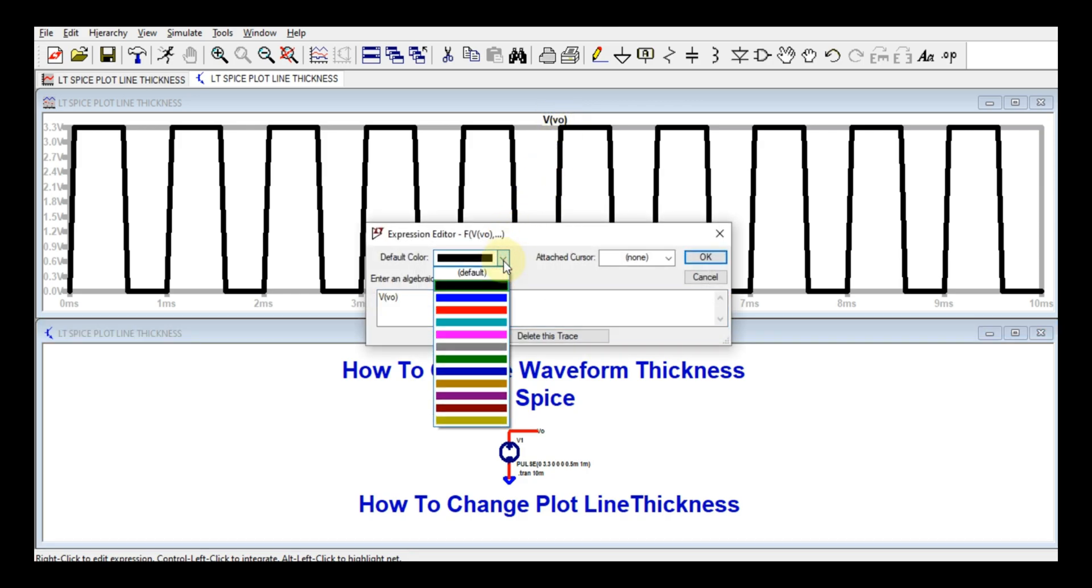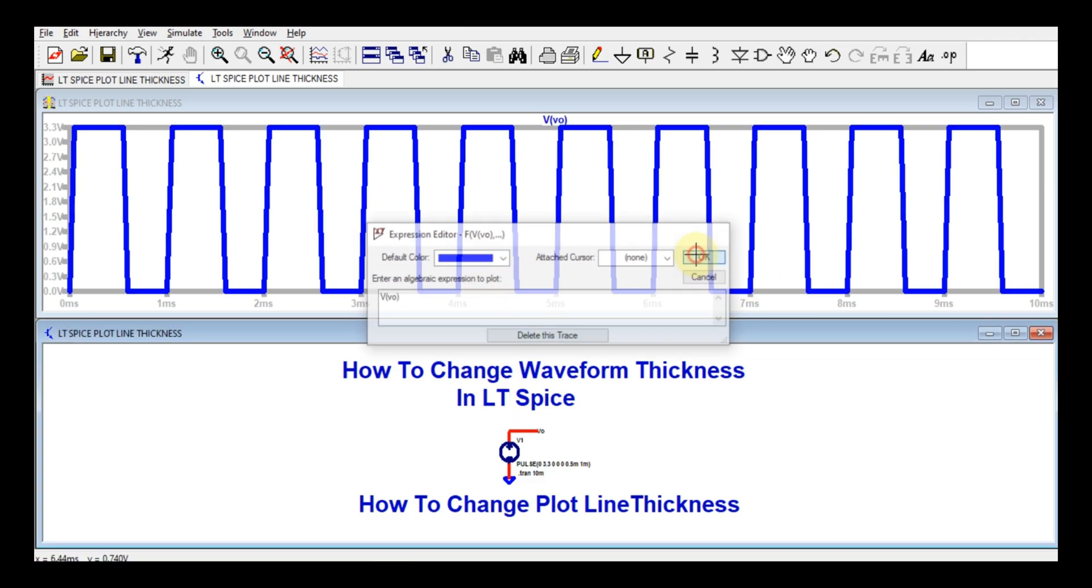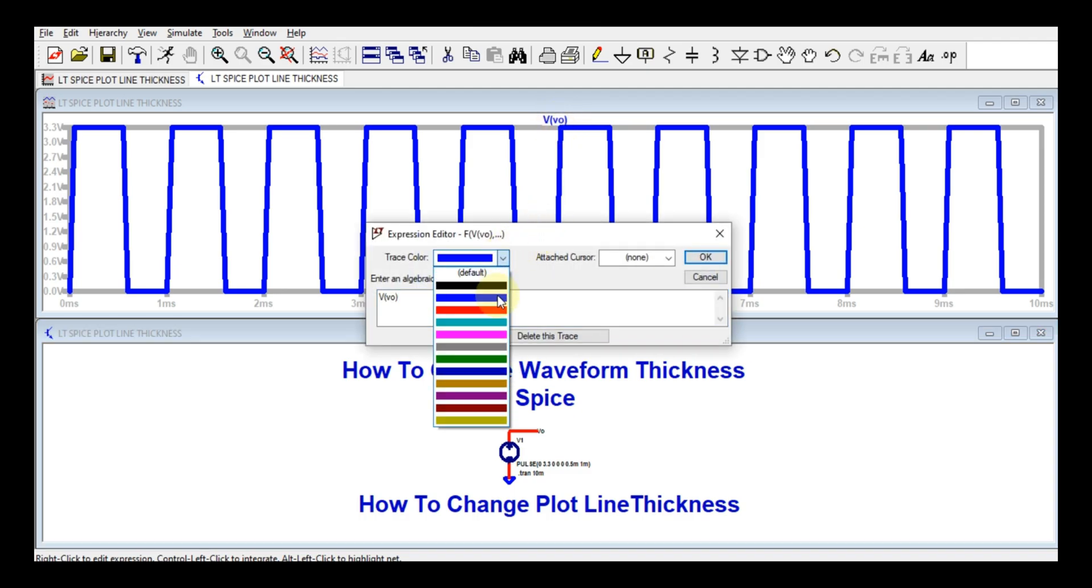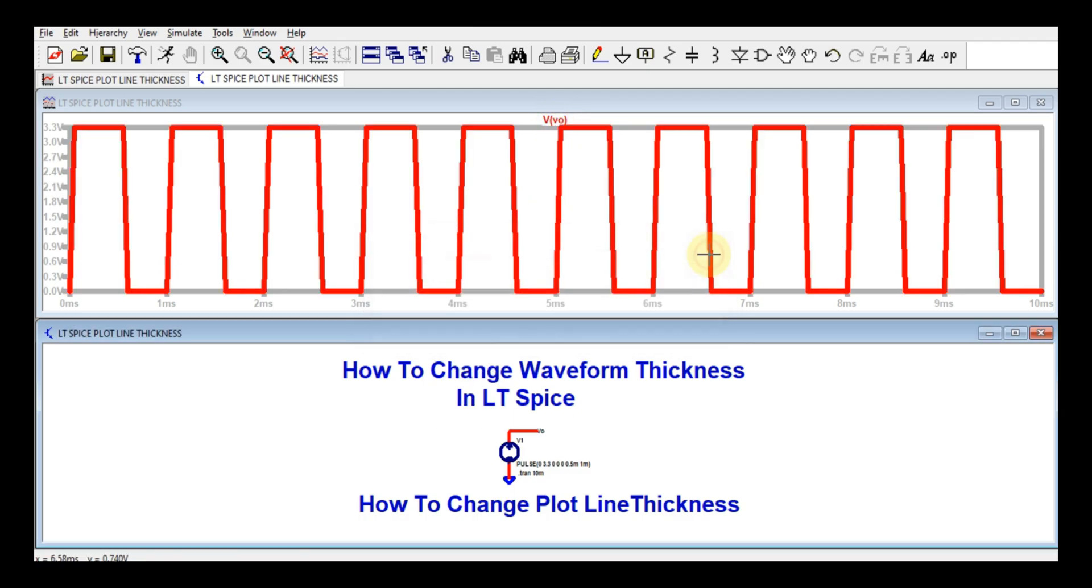The default color is black and you can choose any color. So hope you understand how to change your plot thickness in LT Spice.